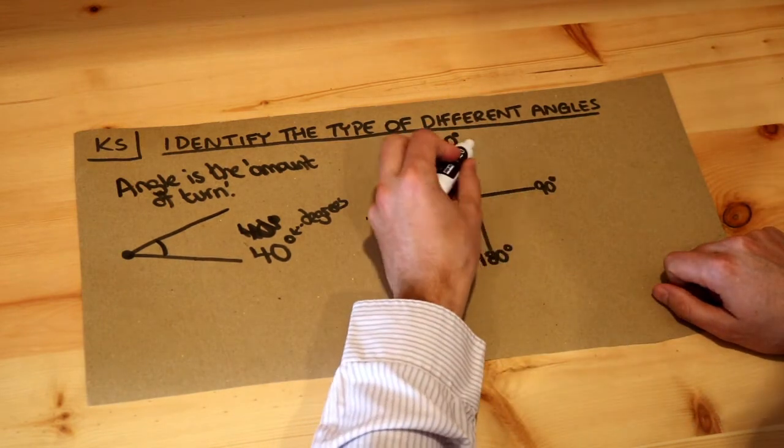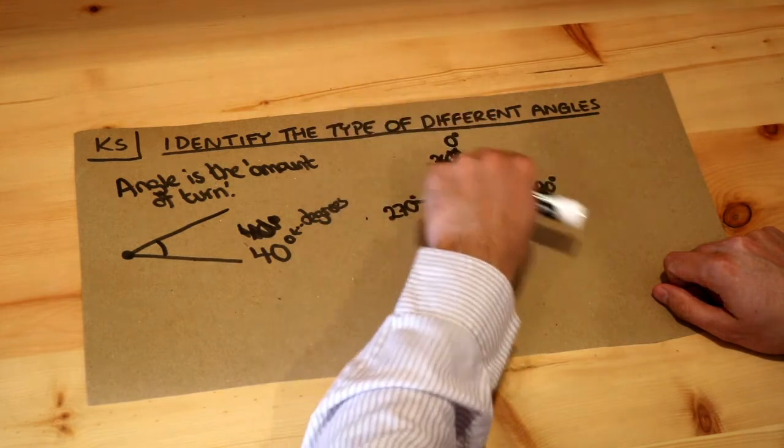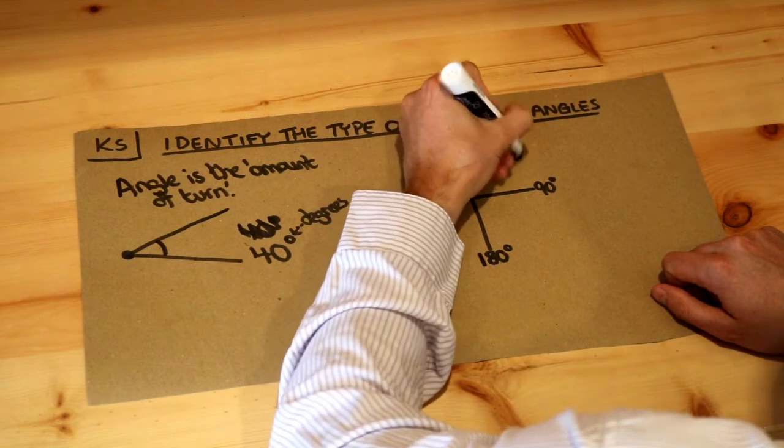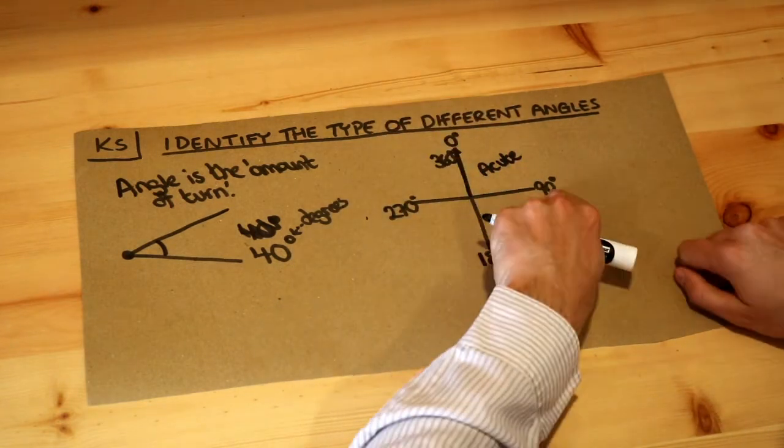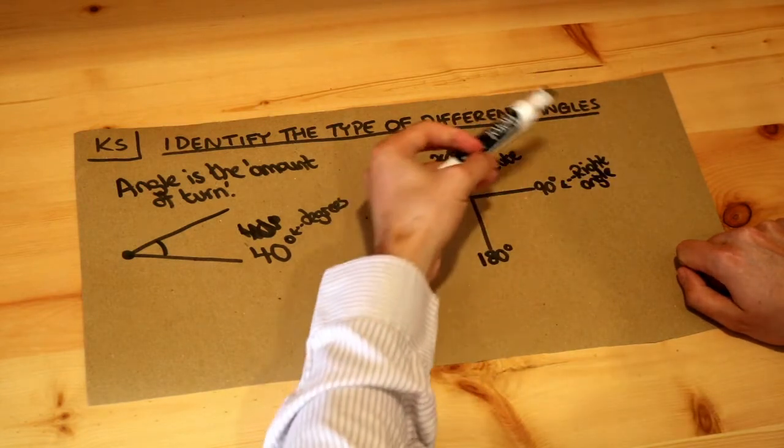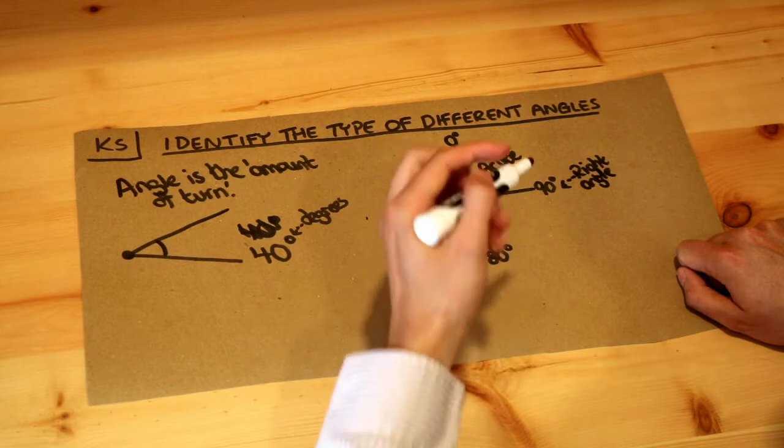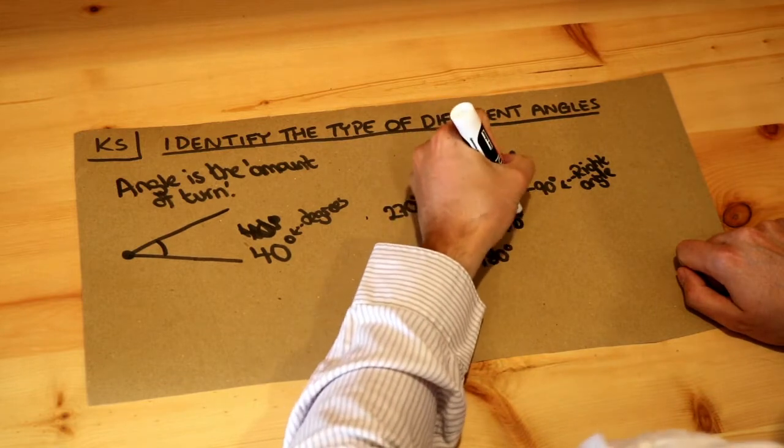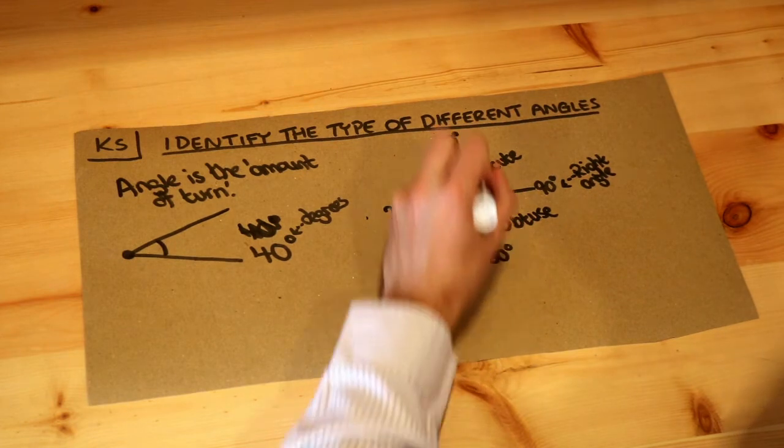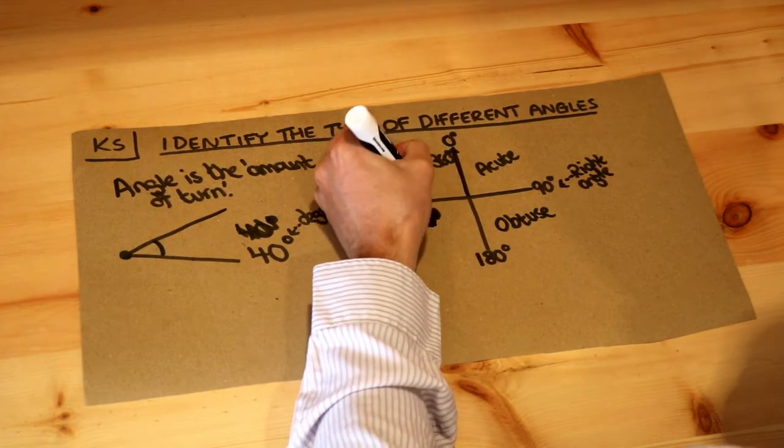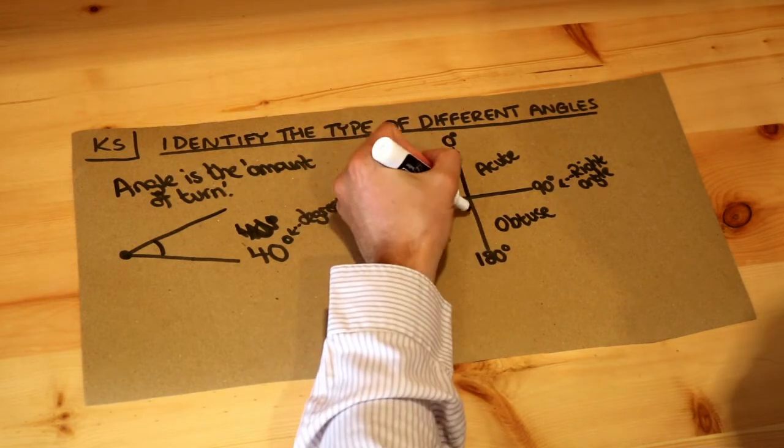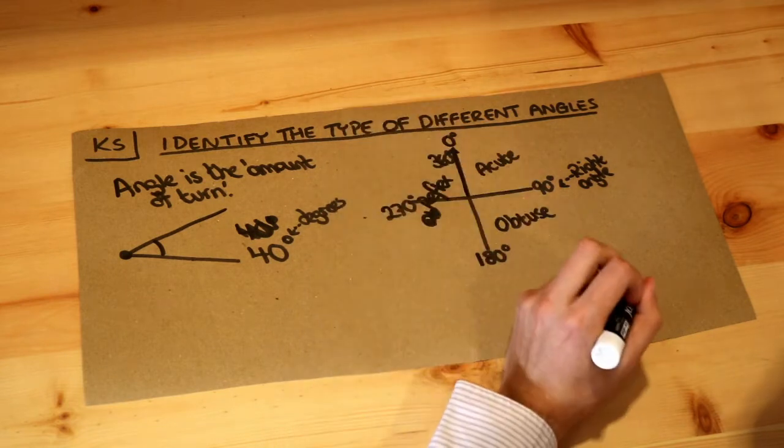Now if an angle is between zero degrees and 90 degrees, that's known as an acute angle. If the angle is exactly 90 degrees, that's known as a right angle. If the angle is between 90 degrees and 180 degrees, that's known as an obtuse angle. And if the angle is more than 180 degrees, so between 180 and 360, that's known as a reflex angle.